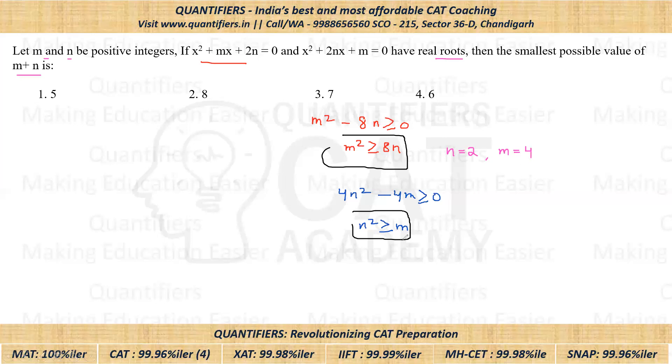Now will this satisfy? If I put N equals 2, I'll get left hand side to be 4. Right hand side is also 4 and they are equal to each other. Yes, they can be equal. So that means students, these are the minimum values of N and M.